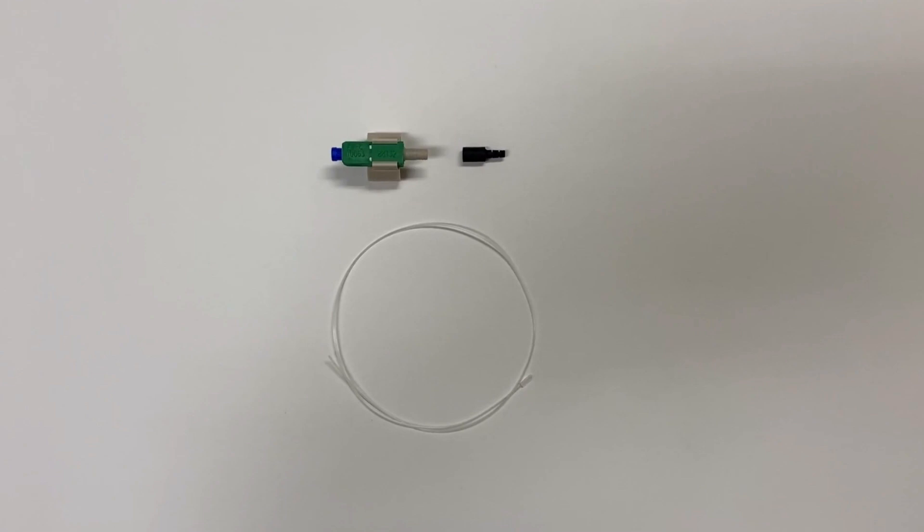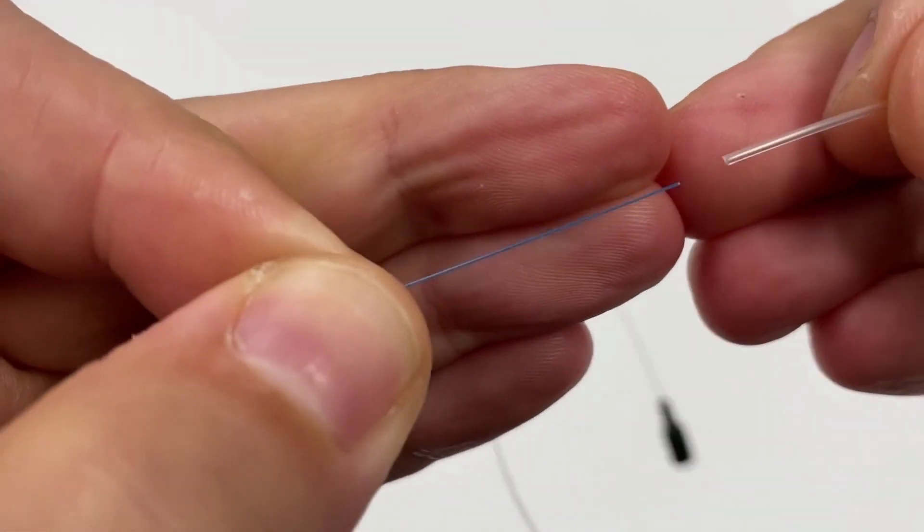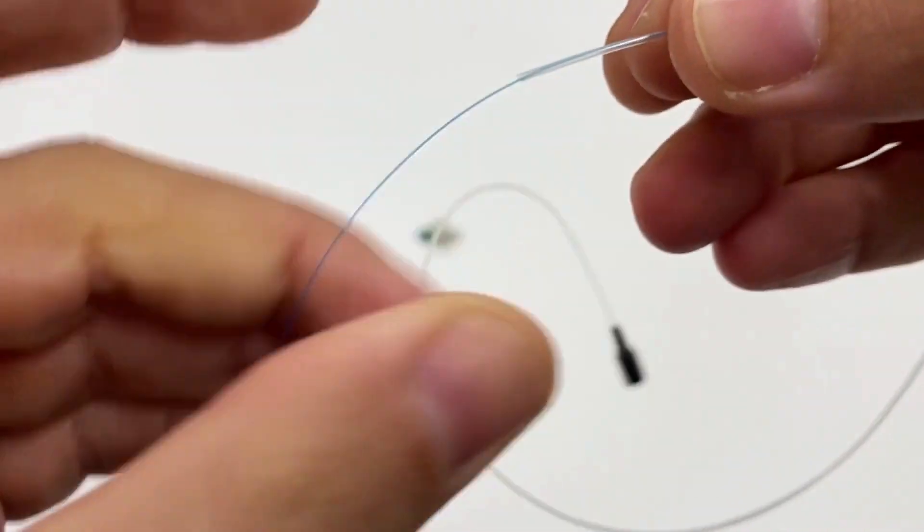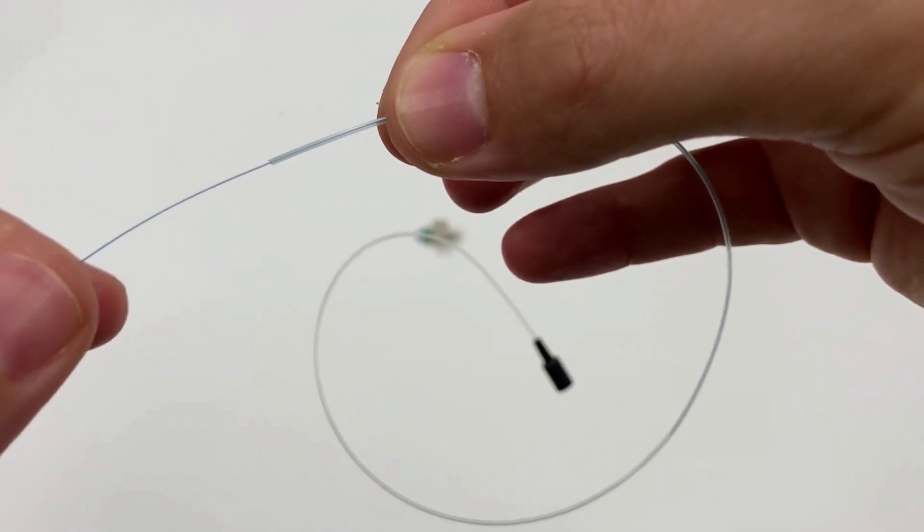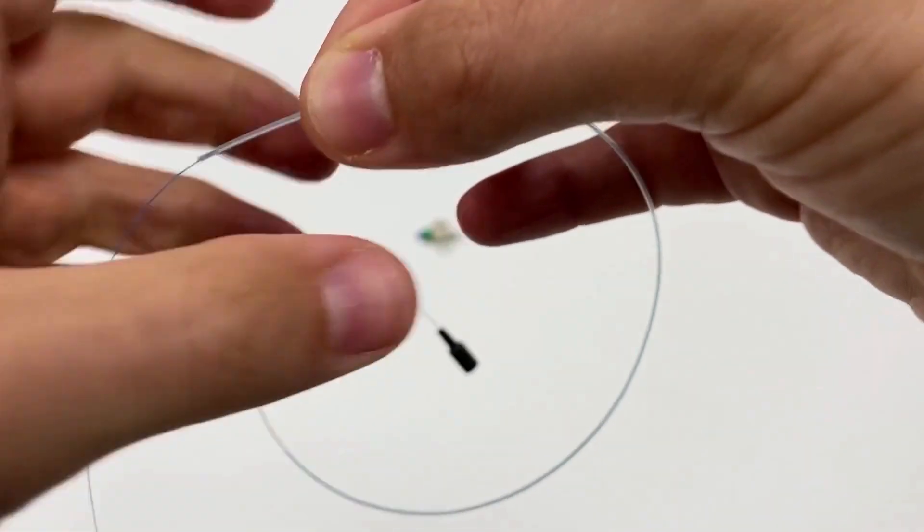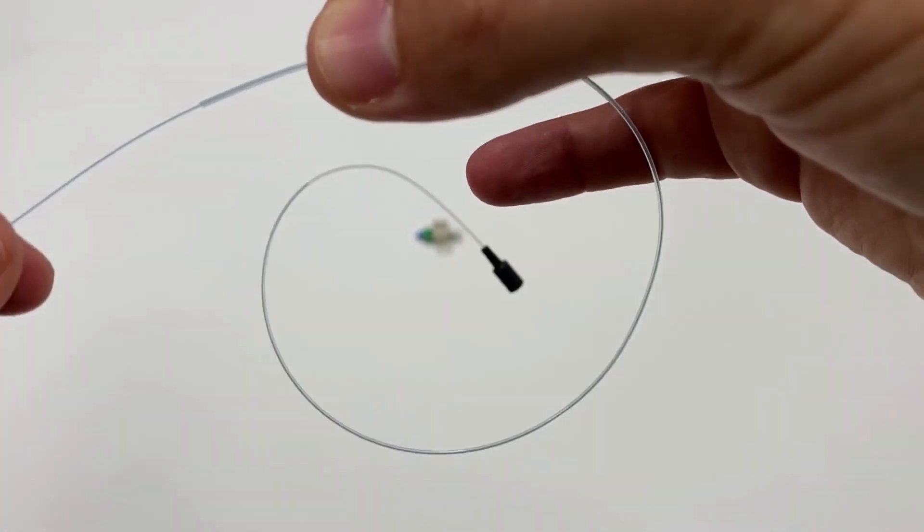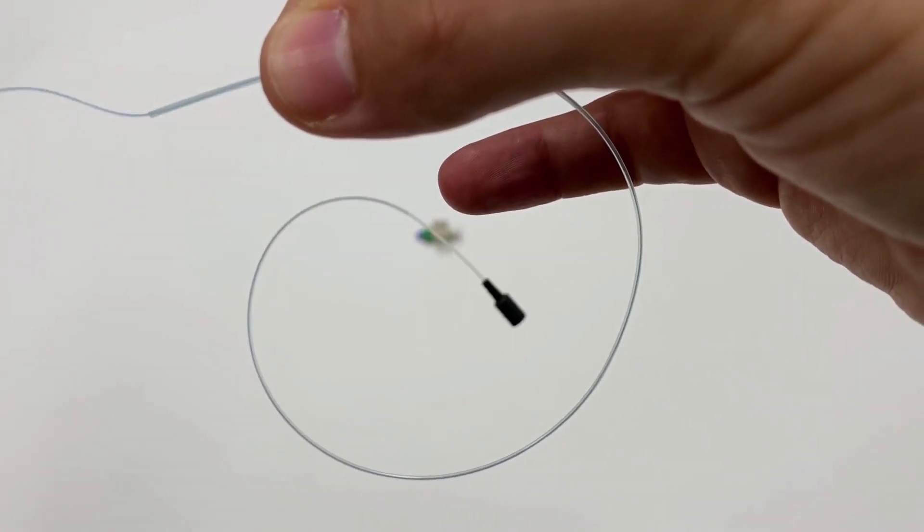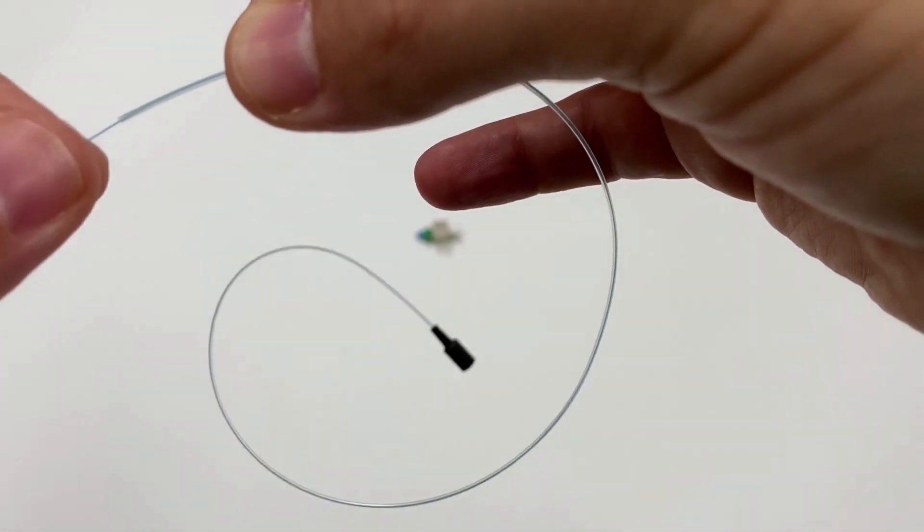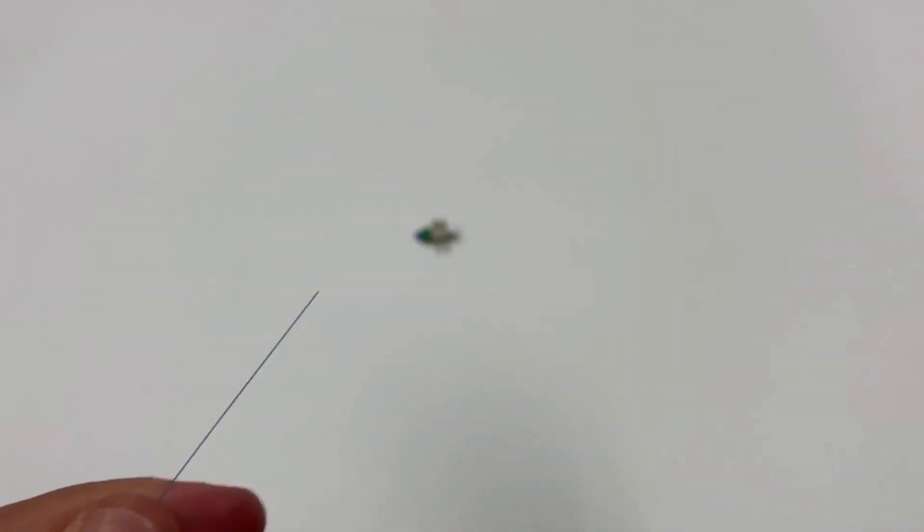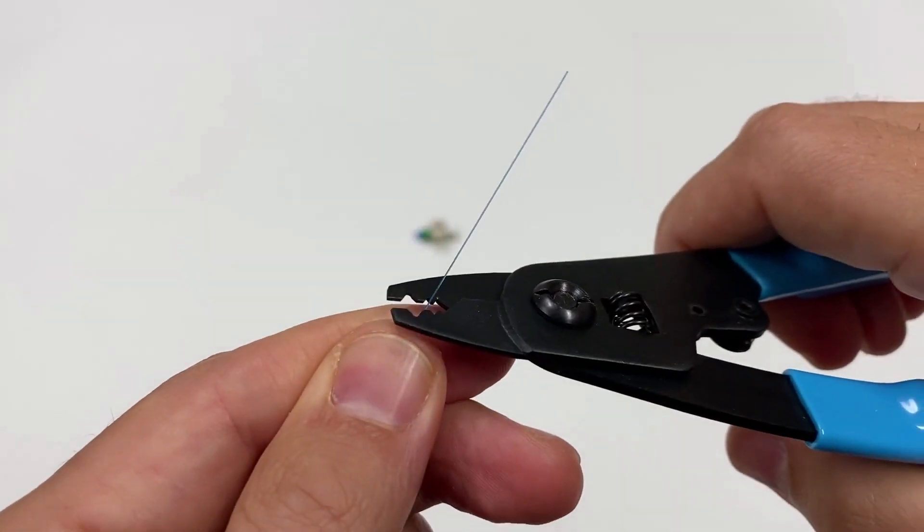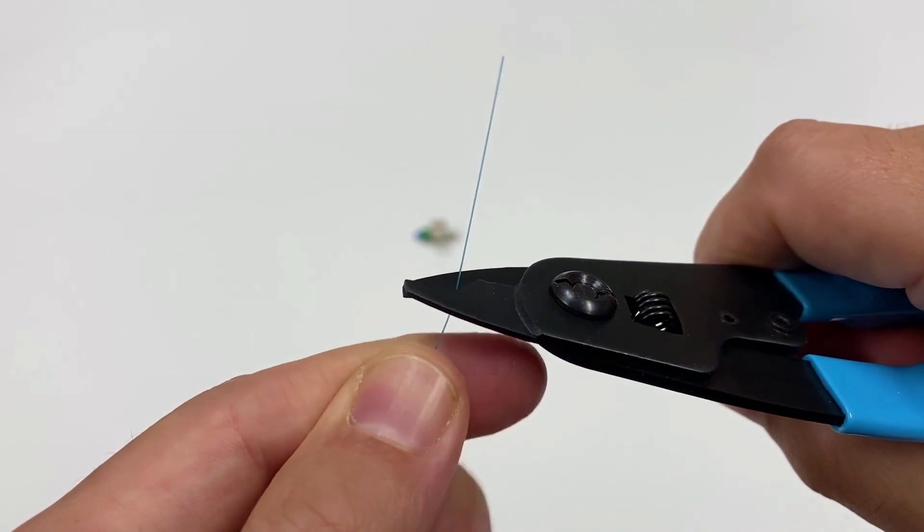Always wear safety glasses and properly dispose of fiber sharps when handling and cleaving optical fibers. For 250 micron termination, insert the 250 micron fiber through the boot and the clear protective tubing. Strip 35 millimeters of 250 micron coating off.